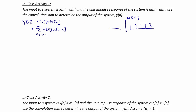Then, if we make a sketch of u of n minus k, we know that it starts at n and it is 1 for all values less than n. So, when we examine these two plots, what we see here is that if we want to multiply these together,